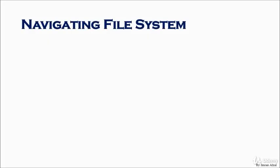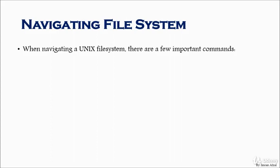Now we know a lot about the file system. We need to know how to get into it — what are those commands to go from one directory to another, get file contents, and find out which directory we are in. When navigating a UNIX file system, there are a few important commands. The first is CD, which stands for change directory. The second is PWD, which is print working directory, which tells you which directory you are currently in. The third is LS, which stands for listing — it lists the contents of your directory or folder.